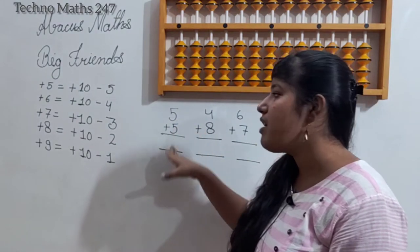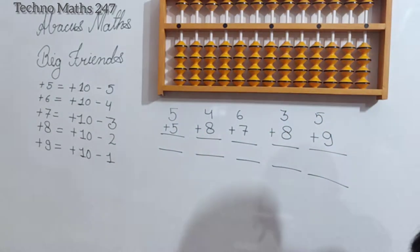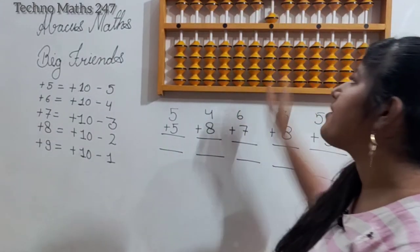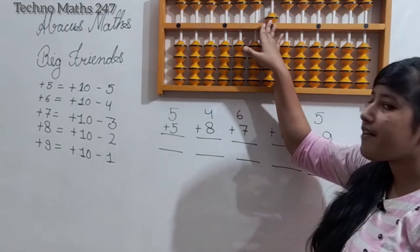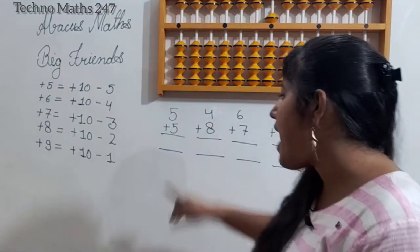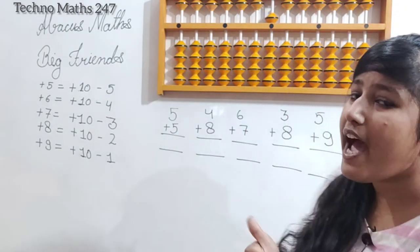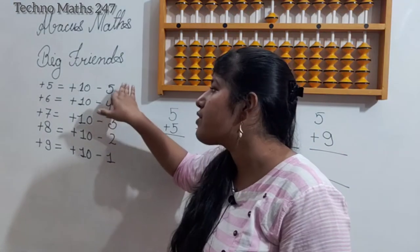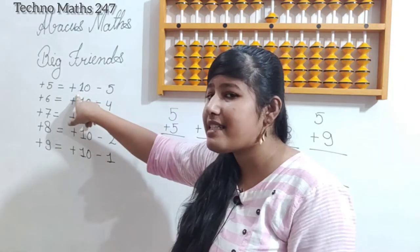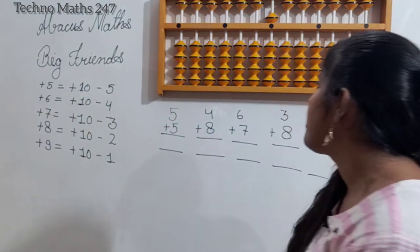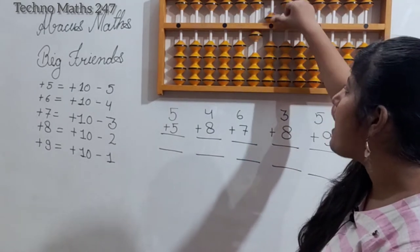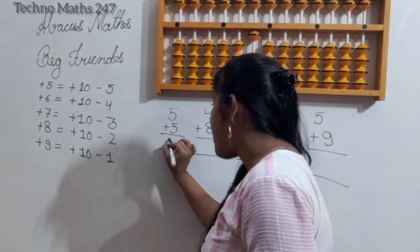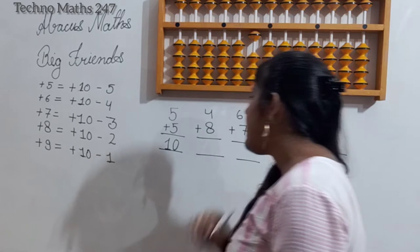Our first question is 5 plus 5. We know that this is our one's rod, and the single upper bead counts as 5. We enter 5. Now we have to add 5 but we don't have 5 available. So we go to the big friend: plus 10 minus 5. We apply plus 10 minus 5, and the answer is 10. So 5 plus 5 equals 10.